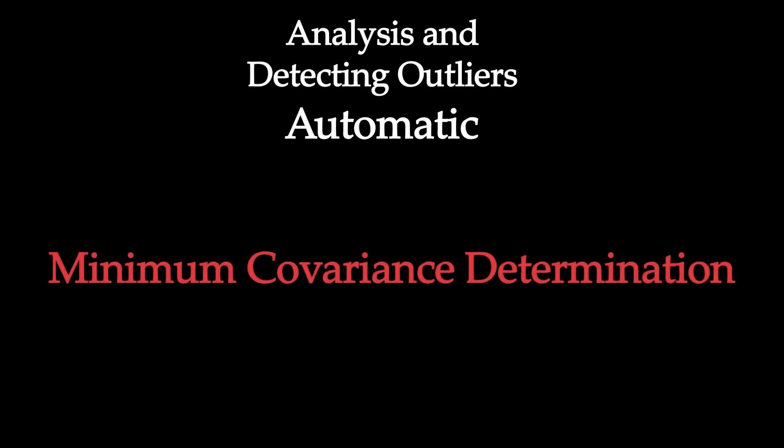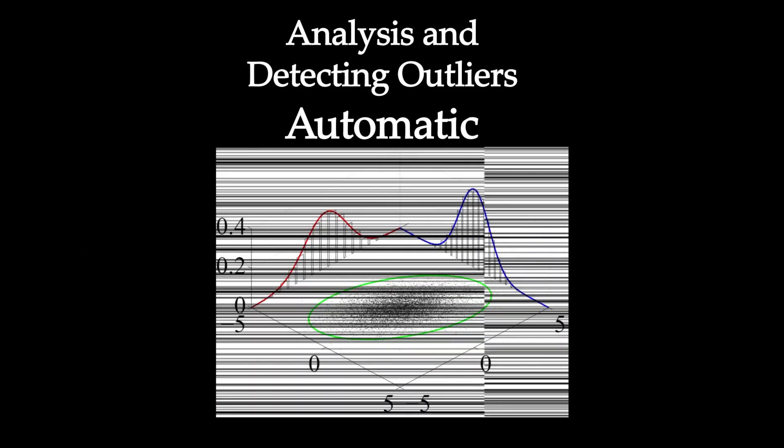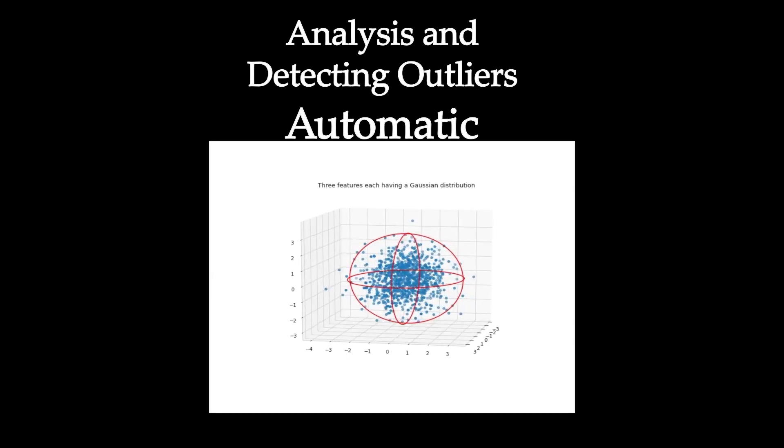First, we'll look at a very interesting method called the minimum covariance determination. What is it exactly? Remember how we plotted the sale price values and said which ones fall out of the normal range? We're doing the same thing here but with multiple features this time. The range becomes something like a circle or in high-dimensional space, an ellipsoid.